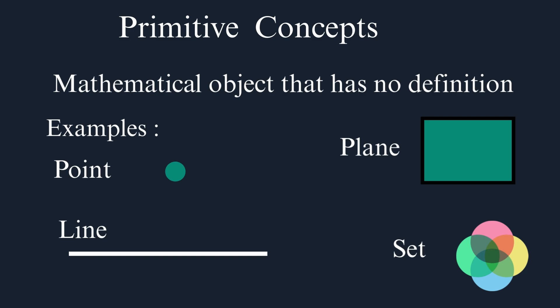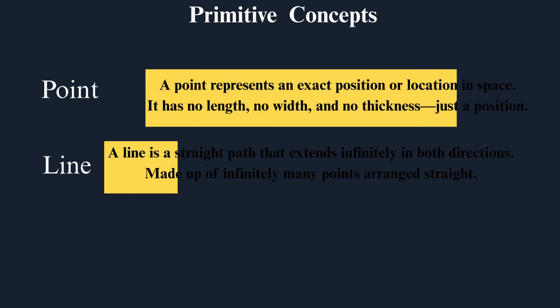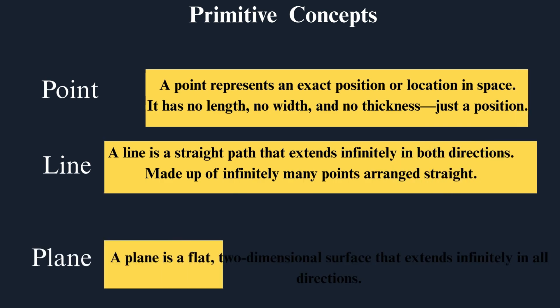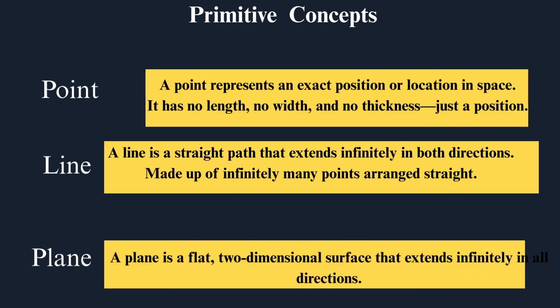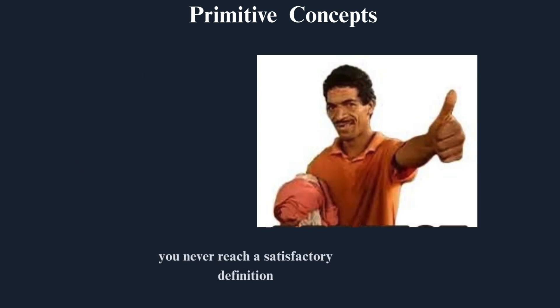They just need to satisfy the axioms or postulates that I'll talk about later. No matter how much you try to define what a point, line, or plane is, these objects have no definition. Why don't they have definitions? Because when trying to create a definition for them, you never reach a satisfactory definition.